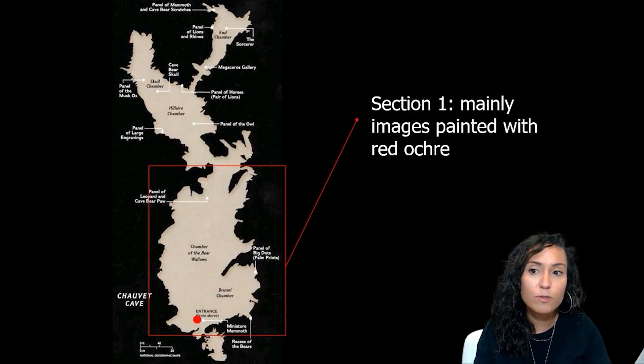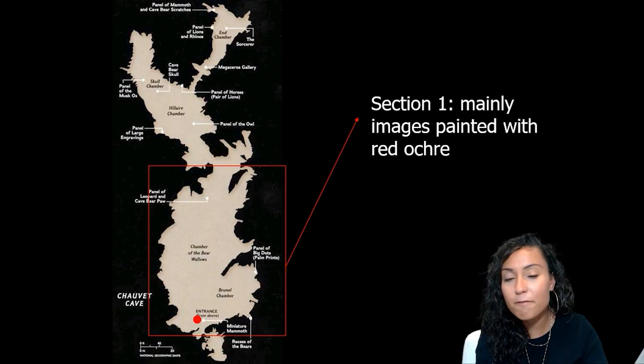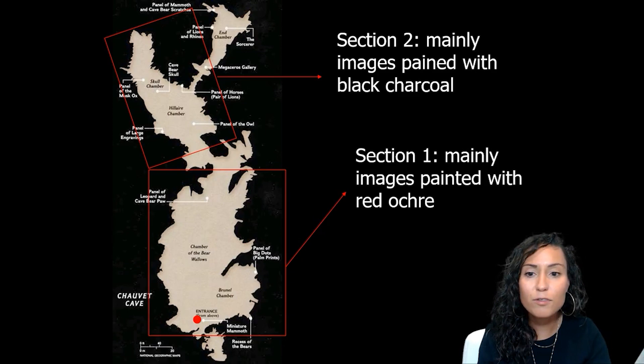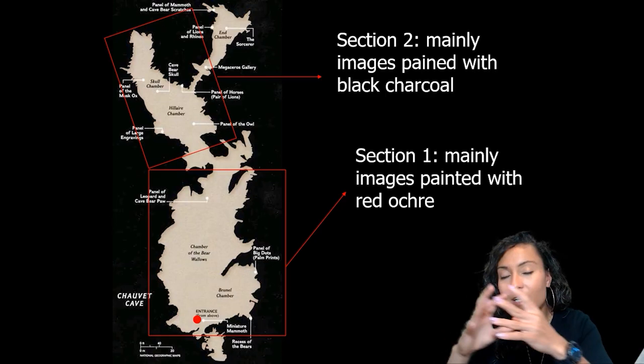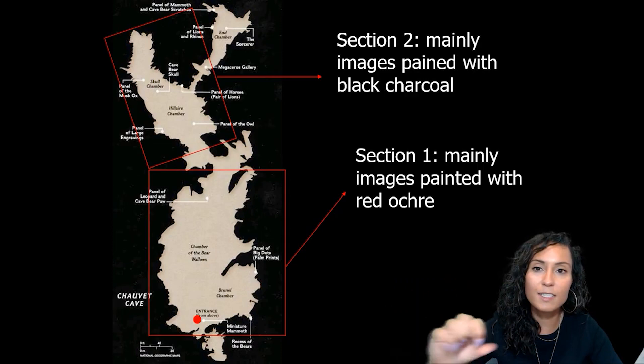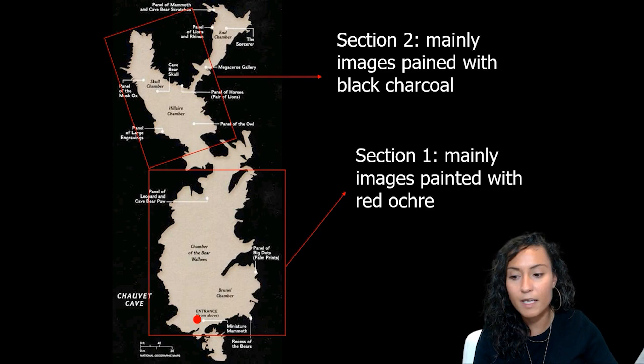Chavot is divided into two major sections. The first section includes images mostly painted in red, with only a few black or engraved images. In section two, the animals are mostly painted in black. There is a clear concentration of imagery, with black and engraved images concentrated in section two and red images concentrated in section one.